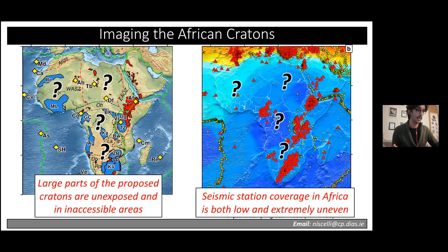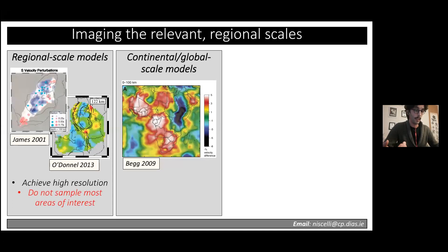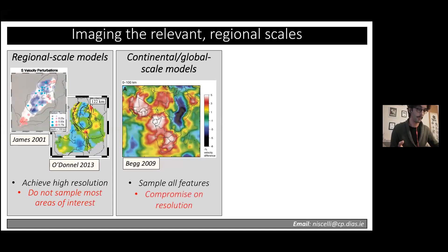Seismic tomography has tried to approach the problem of imaging Africa and its cratons in different ways. One traditional way is using regional-scale tomographic models — while these achieve high resolution, they do not sample most of the areas of interest. The opposite approach uses continental and global-scale models, but these have to compromise on resolution due to the sheer computational scale of the problem.